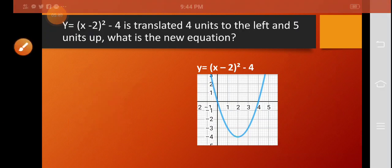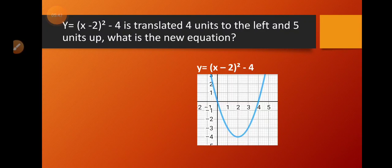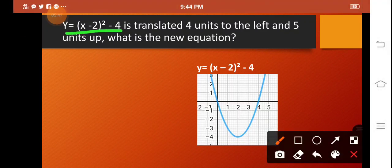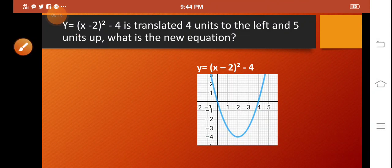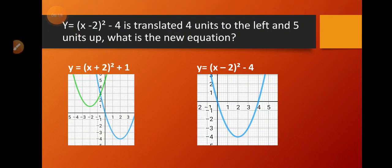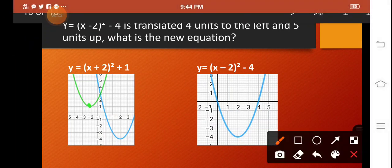Now what if the equation y is equal to the square of the quantity x minus 2, minus 4 is translated 4 units to the left and 5 units upward? Counting 4 units to the left and 5 units upward gives a new position on the graph. So what will be our new equation? The new vertex is at negative 2 and 1.